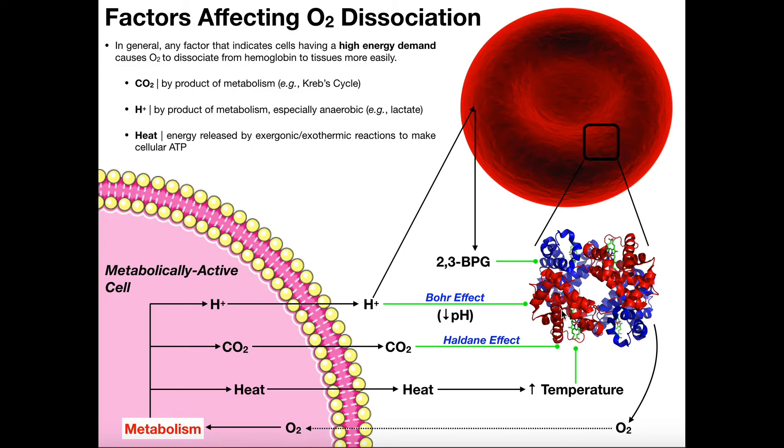In this video, we're going to discuss the factors that affect oxygen dissociation to the tissues. Hopefully what we know by now is that oxygen is transported in the blood mostly bound to hemoglobin. So here's a hemoglobin protein right here.